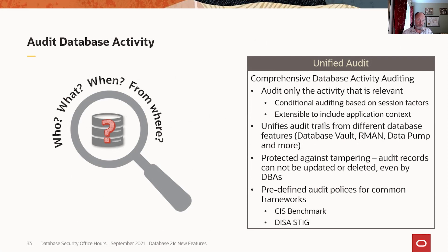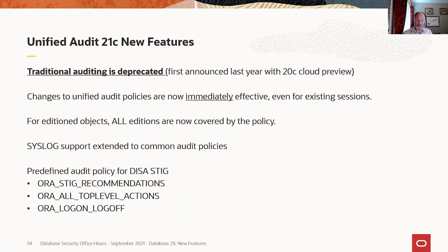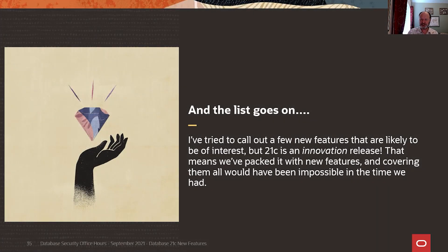From an auditing standpoint, we introduced unified auditing in Oracle 12c — a very mature feature used by tens of thousands of Oracle database users. The time is here: we are announcing the deprecation of traditional auditing. We will sometime in the near future be announcing the obsolescence of this, so if you haven't migrated to unified auditing, now is the time. We've extended syslog support for unified auditing to common container audit policies. We've also introduced new default policies that match the DISA STIG requirements, and you'll see those in the database as well as in Data Safe and Audit Vault and Database Firewall. Those are the cherry-picked highlights — there are lots more, so take a look at the documentation. You can play with 21c in the Oracle cloud, and now you can download it for use on premises.